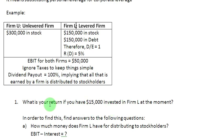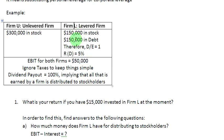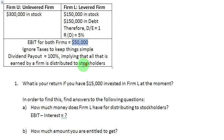To find out how much return we are generating, we need to answer: how much money does Firm L have for distributing to its shareholders? Since the dividend payout ratio is 100%, all that the firm earns — $50,000 in EBIT — is available for distribution. But Firm L has $150,000 in debt, so they must first pay interest on that amount at 5%. From the $50,000 EBIT, we subtract the interest, and whatever remains is available for distribution to stockholders.